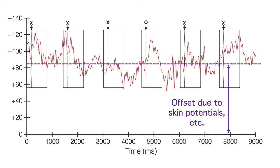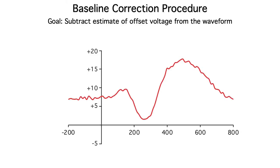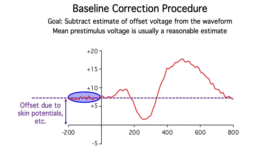Fortunately, there's an easy way to subtract out the offset in our single trial EEG epochs. Here's an example. You can see a small offset due to skin potentials, etc. We start with the assumption that the voltage immediately prior to the stimulus is a good estimate of the offset, although it also contains some random EEG noise.